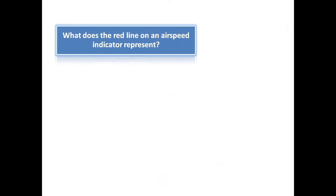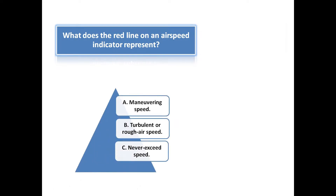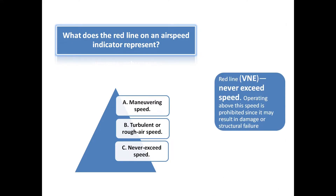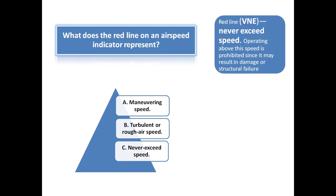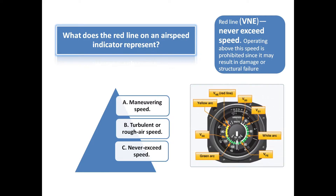What does the red line on an airspeed indicator represent? The red line on an airspeed indicator represents the VNE speed, also known as the never-exceed speed. Notice the chart on the right with the red line — this is the VNE never-exceed speed. The correct answer is C.